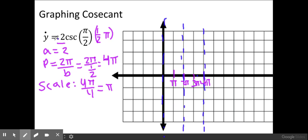And then we're going to use the amplitude to label the y-axis. So we have 1 and 2 and down negative 1 and negative 2.